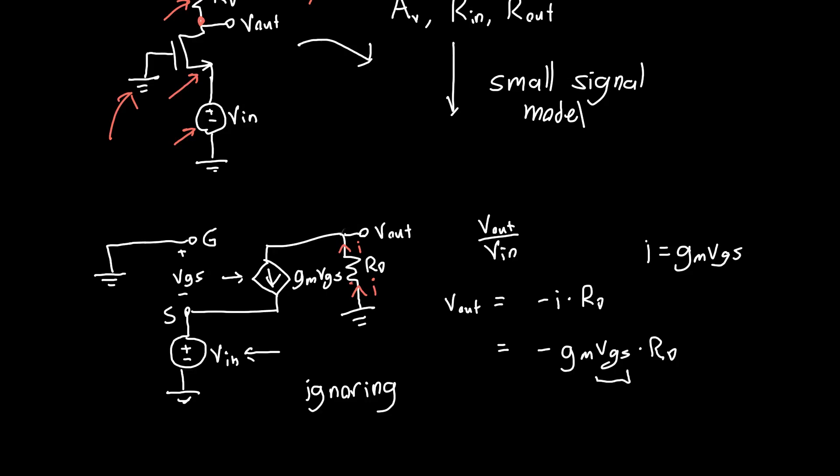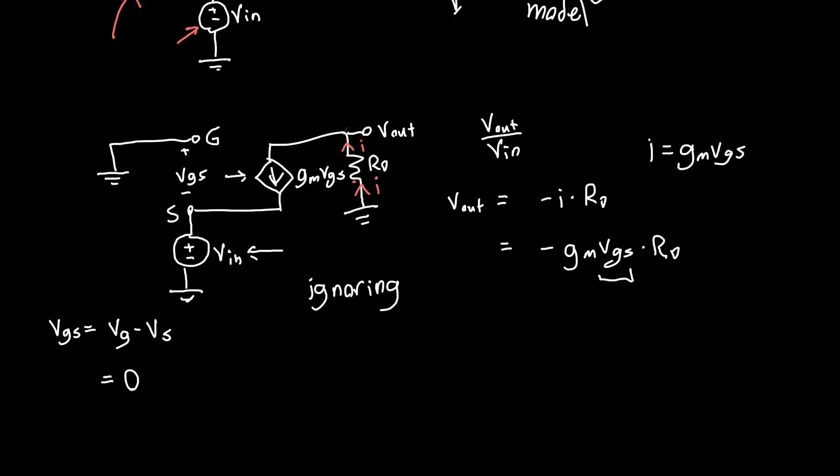What's VGS? VGS as usual is just VG minus VS. VG here is grounded so that's zero volts, and VS, the voltage at the source, is just equal to VIN. So VGS is just equal to minus VIN. Then the output voltage is equal to minus gm times minus VIN times RD, or positive gm*RD.